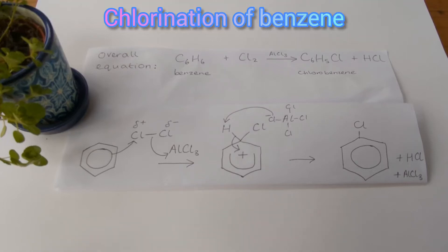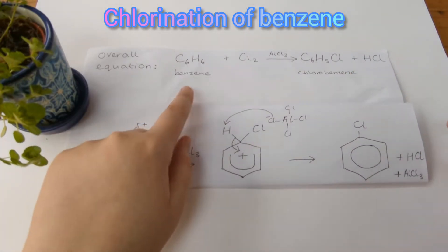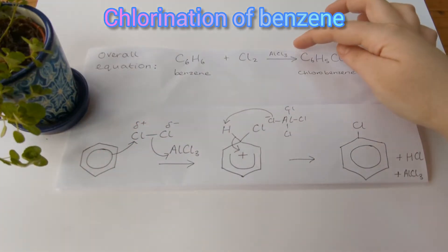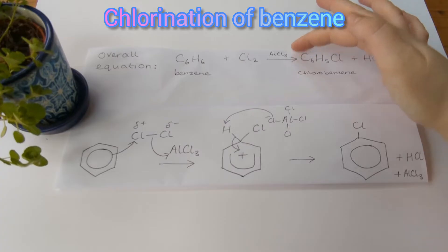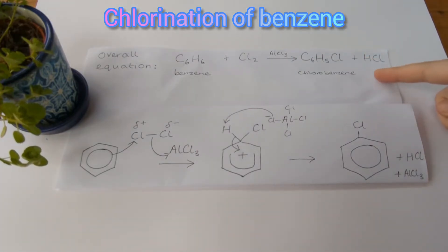Hi there everyone. In this video we are going to look at the electrophilic substitution mechanism for the chlorination of benzene. The overall equation shows benzene reacting with a molecule of chlorine in the presence of aluminium chloride, which is known as a halogen carrier and is a catalyst, forming the product chlorobenzene and a by-product of HCl.